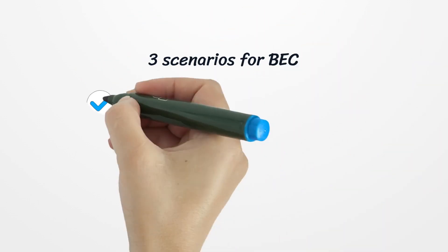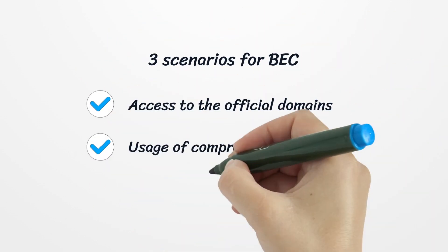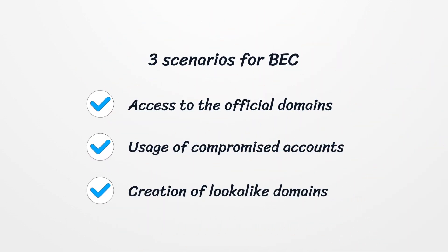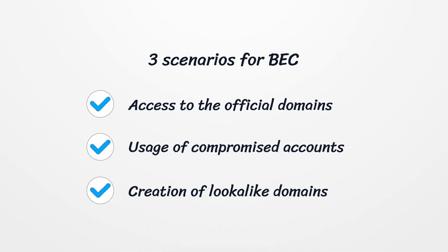There are usually three scenarios for BEC: cyber attackers gain access to the official domains, make use of compromised accounts, or create look-alike domains.